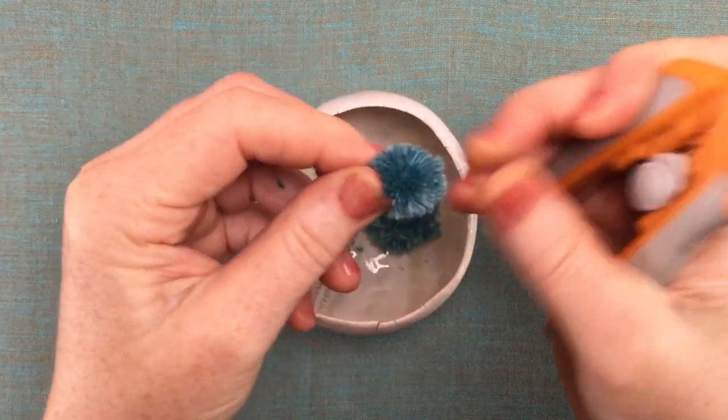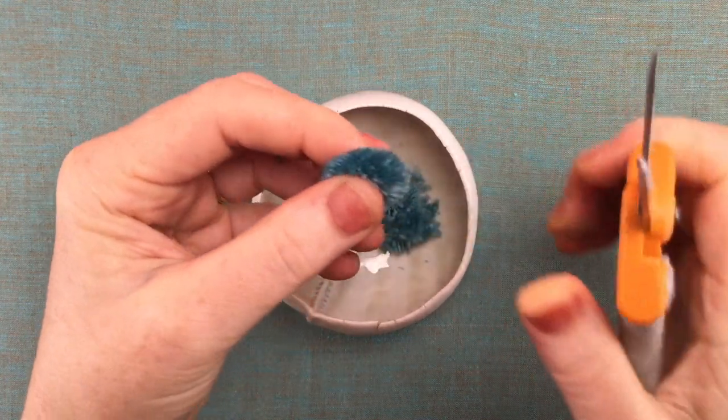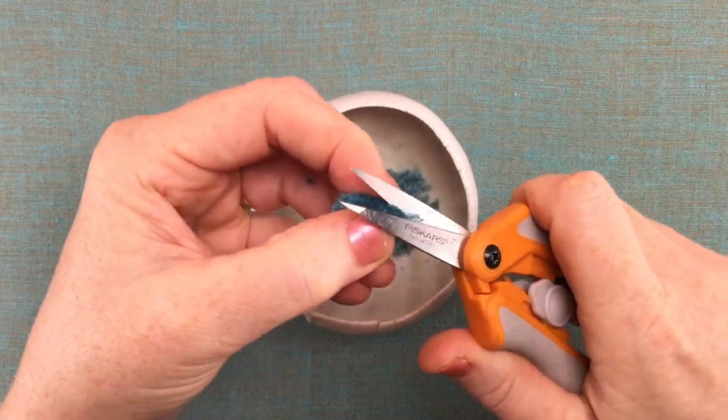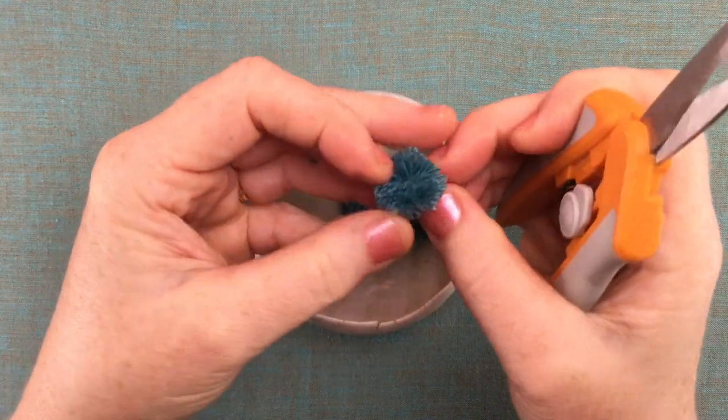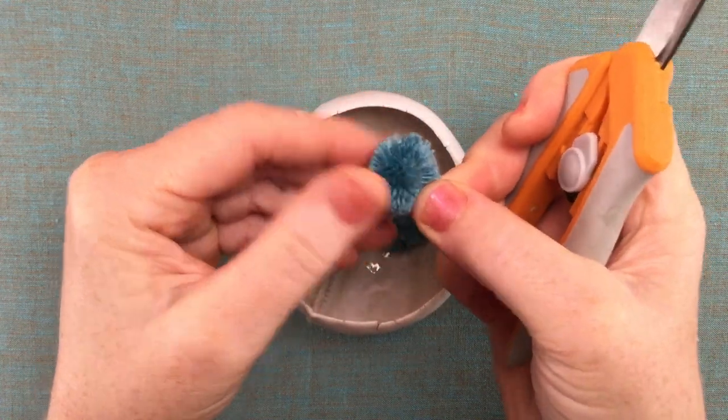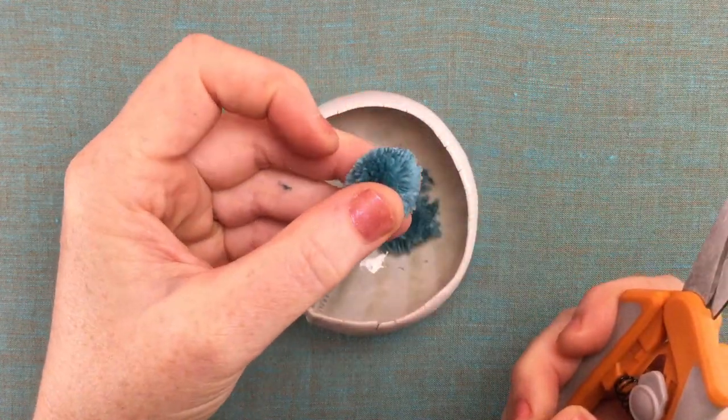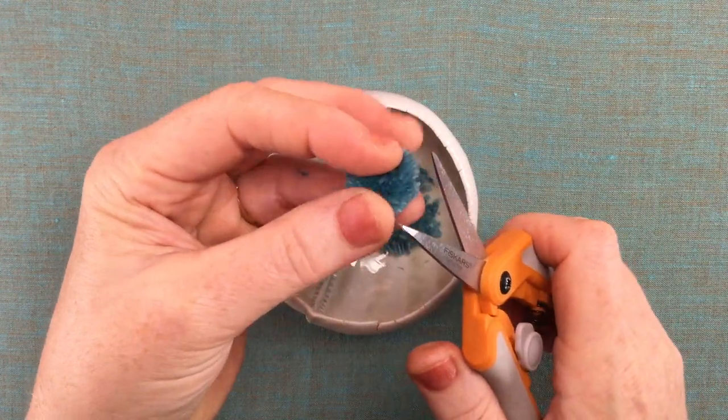And then you want to fluff up the pom-pom a little bit and you're going to have a few other areas that need a little bit of attention. So you just kind of look around the pom-pom, see what's sticking out.